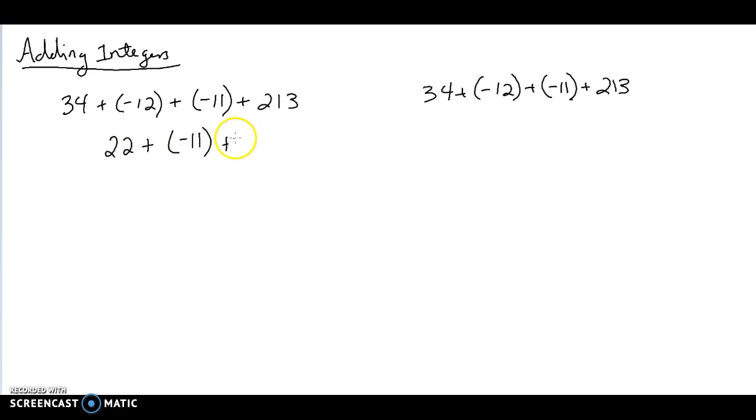Let me bring everything else back down that I've not used yet. If I do 22 plus negative 11, because the signs are different I'm actually subtracting, so it's really 22 minus 11, which is going to give me 11. It will stay a positive 11 because I had more positive to begin with. Let me bring down the plus 213, that's the only thing we've not used yet.